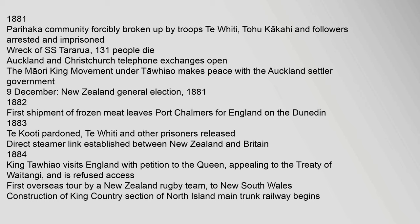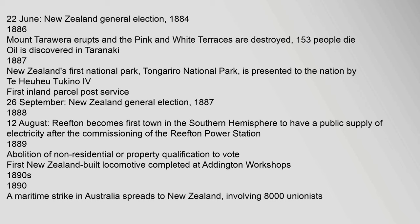First overseas tour by a New Zealand rugby team, to New South Wales. Construction of the King Country section of the North Island Main Trunk Railway begins. 22 June: New Zealand general election. 1884–1886: Mount Tarawera erupts and the pink and white terraces are destroyed. 153 people die. Oil is discovered in Taranaki.